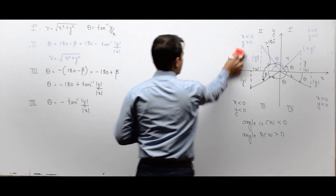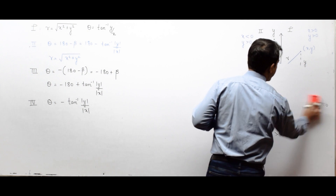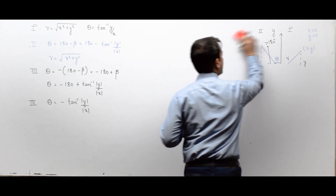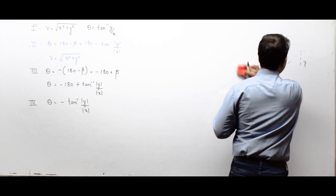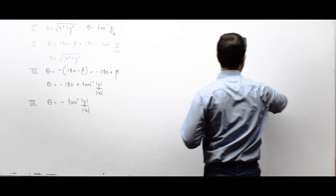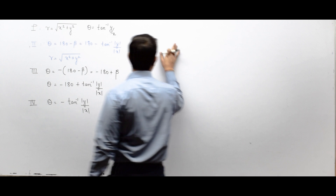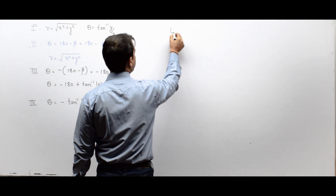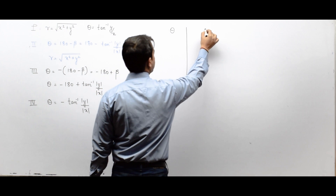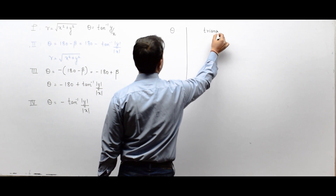In an offline calculator we can easily convert between rectangular and polar. But for the virtual calculator, you have to remember certain angles and triangles and perform the conversion manually.